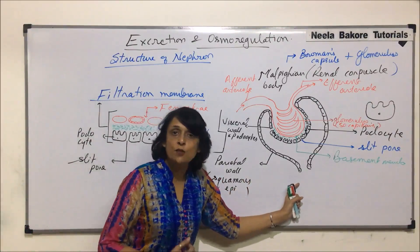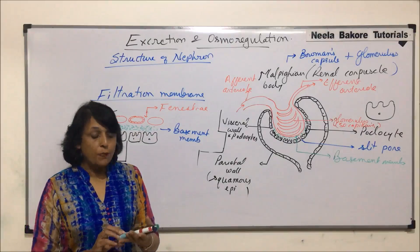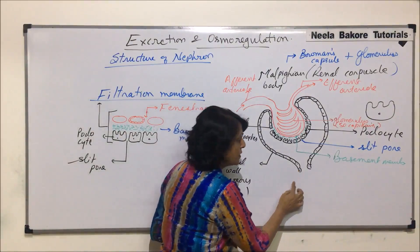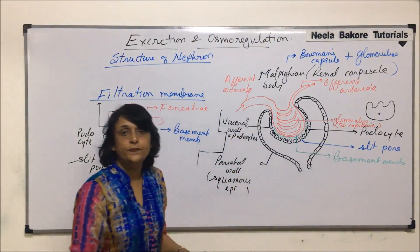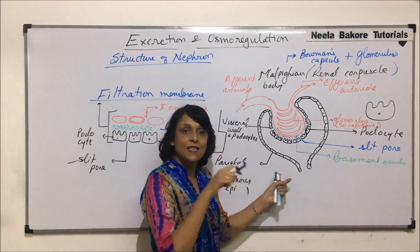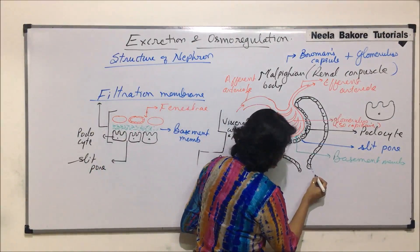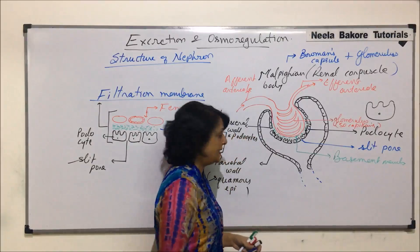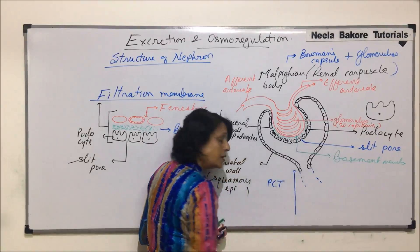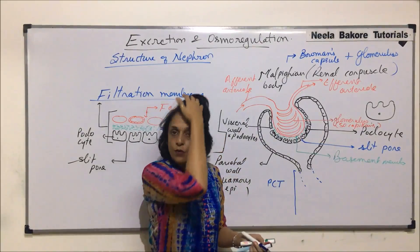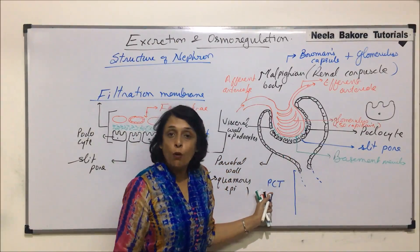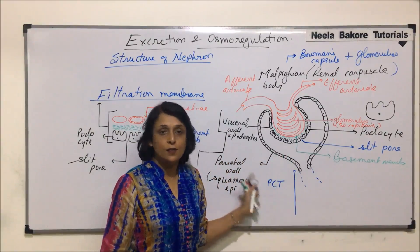Now, let us come to the next part of the nephron, that is the proximal convoluted tubule (PCT). From the neck of the Bowman's capsule starts PCT. It is a coiled part and we will use a different color to show the connection and the different types of cells. PCT stands for proximal convoluted tubule — proximal because it is the first, closer part to Bowman's capsule; coiled, so convoluted; and it is the tubular part.